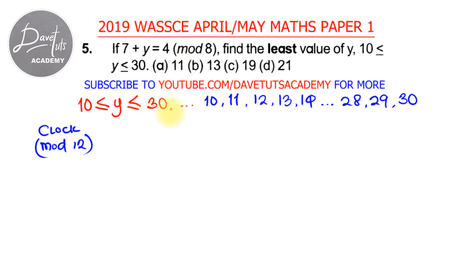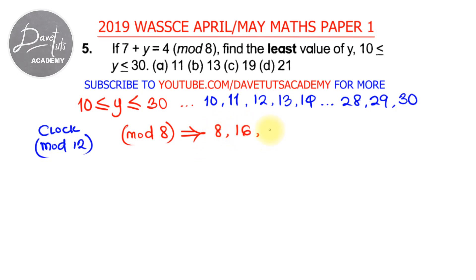For this particular case, when we are talking about modulo 8, that means we are talking about the multiples of 8. For example, we have 8 times 1 is 8, times 2 is 16, times 3 is 24, times 4 is 32, times 5 is 40, and so on.